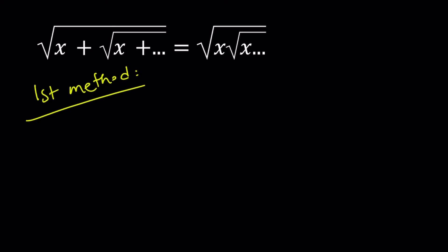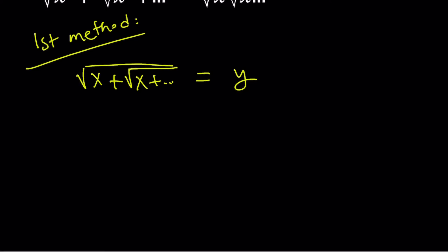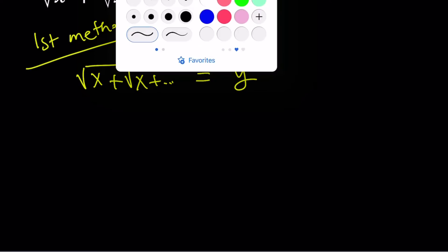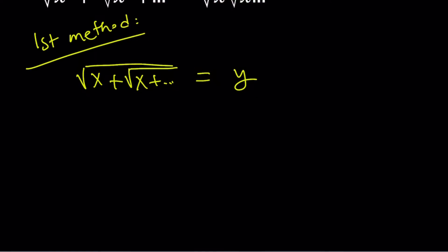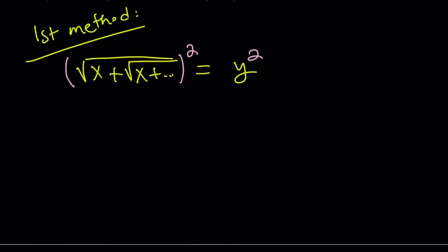My first method involves setting the left hand side equal to a variable, say y, and don't ask why. Now we're going to go ahead and square both sides here. My goal is to solve for x in terms of y. And we've done this before, but I'm going to repeat that just in case you haven't seen this approach.